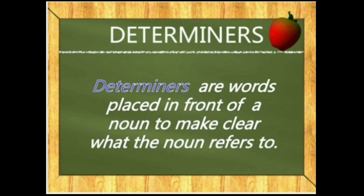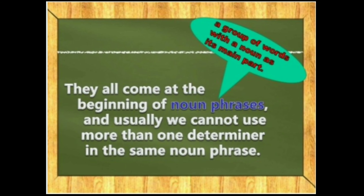You may get confused here because we have learned before about adjectives. Adjectives describe a noun, but determiners specify a noun. They all come at the beginning of noun phrases, and usually we cannot use more than one determiner in the same noun phrase.